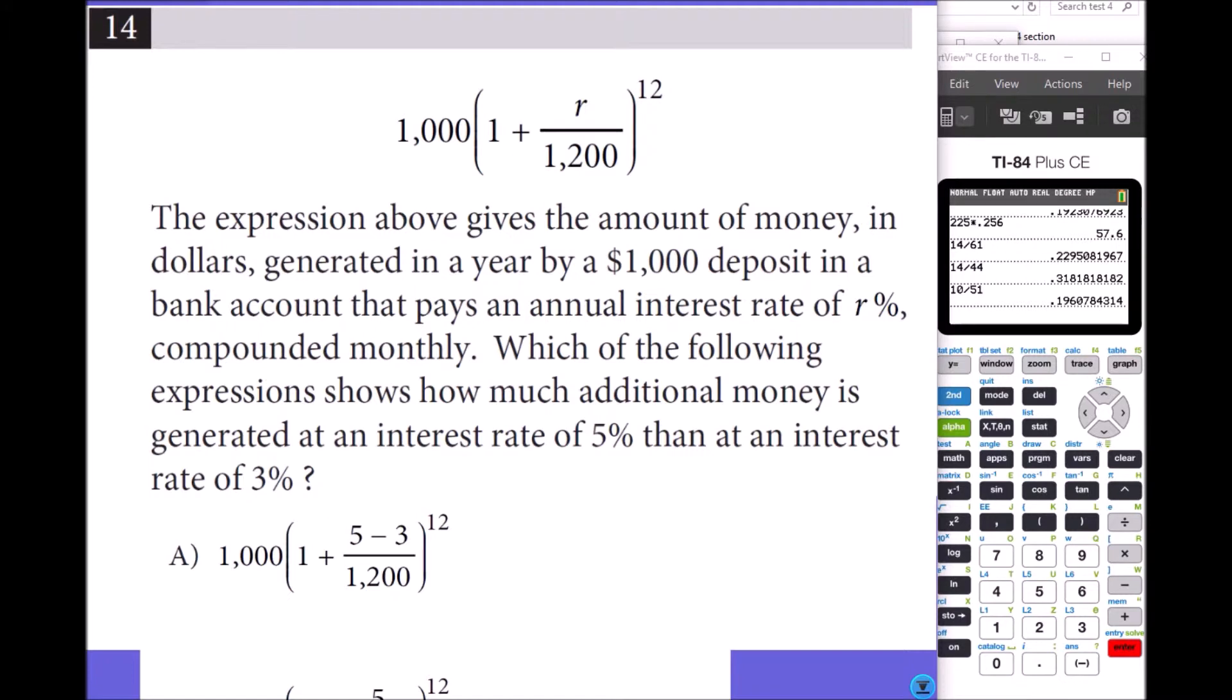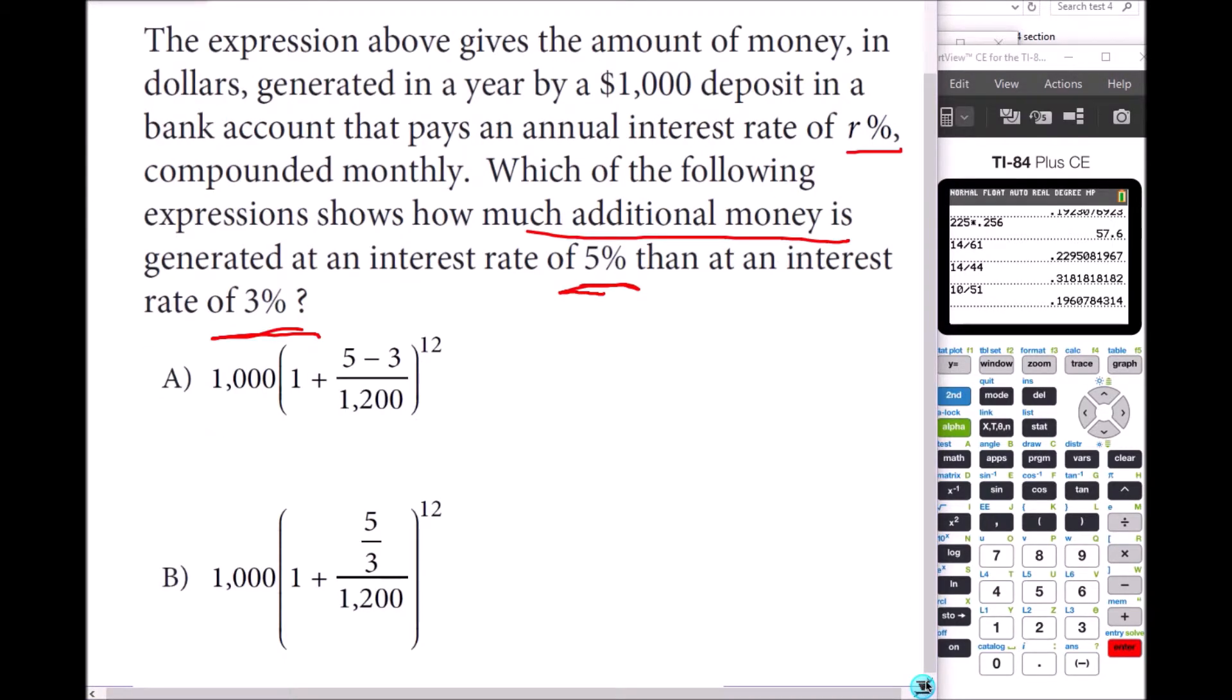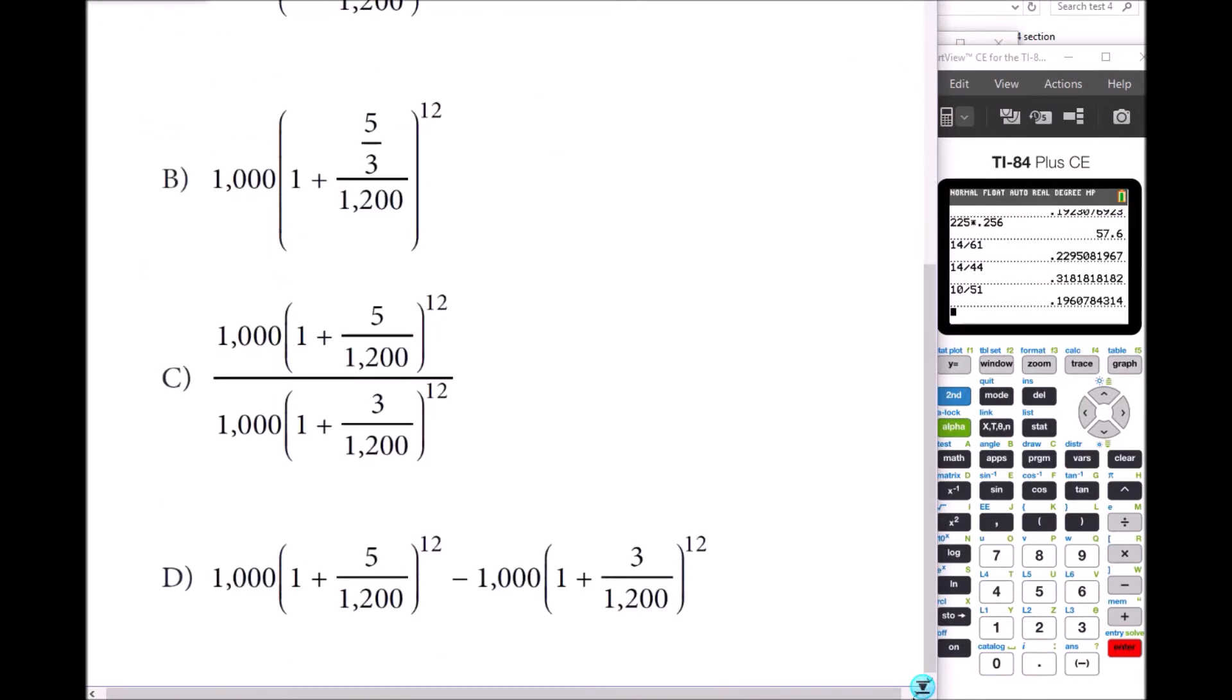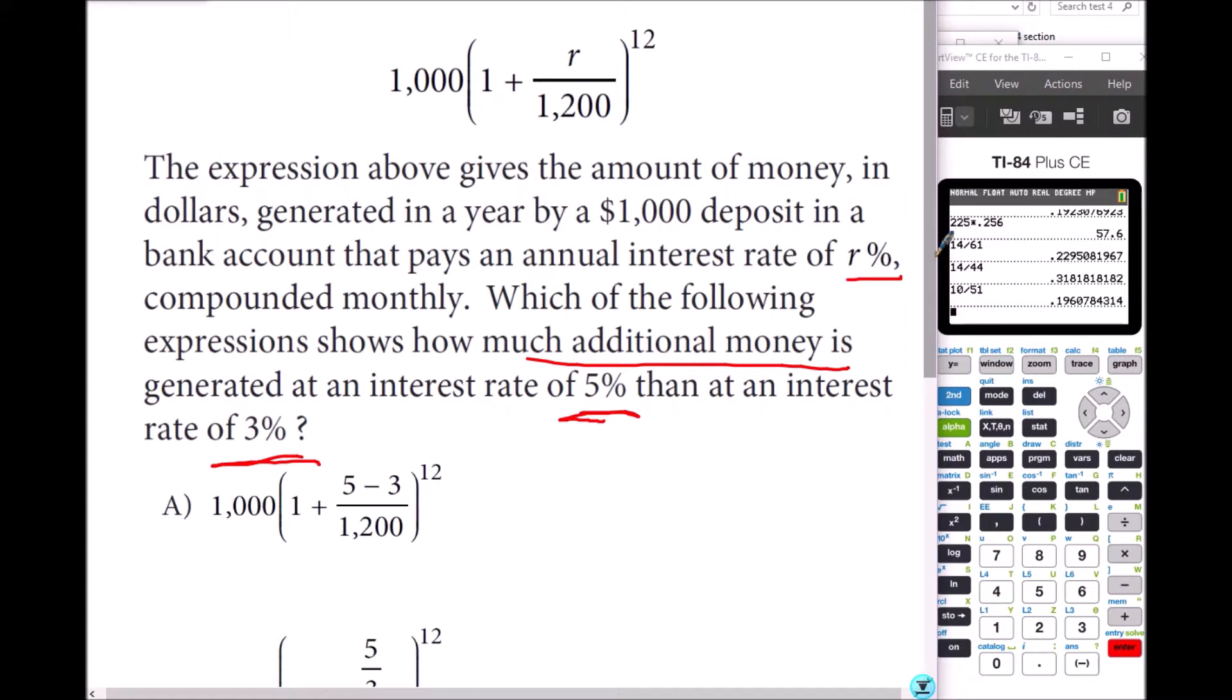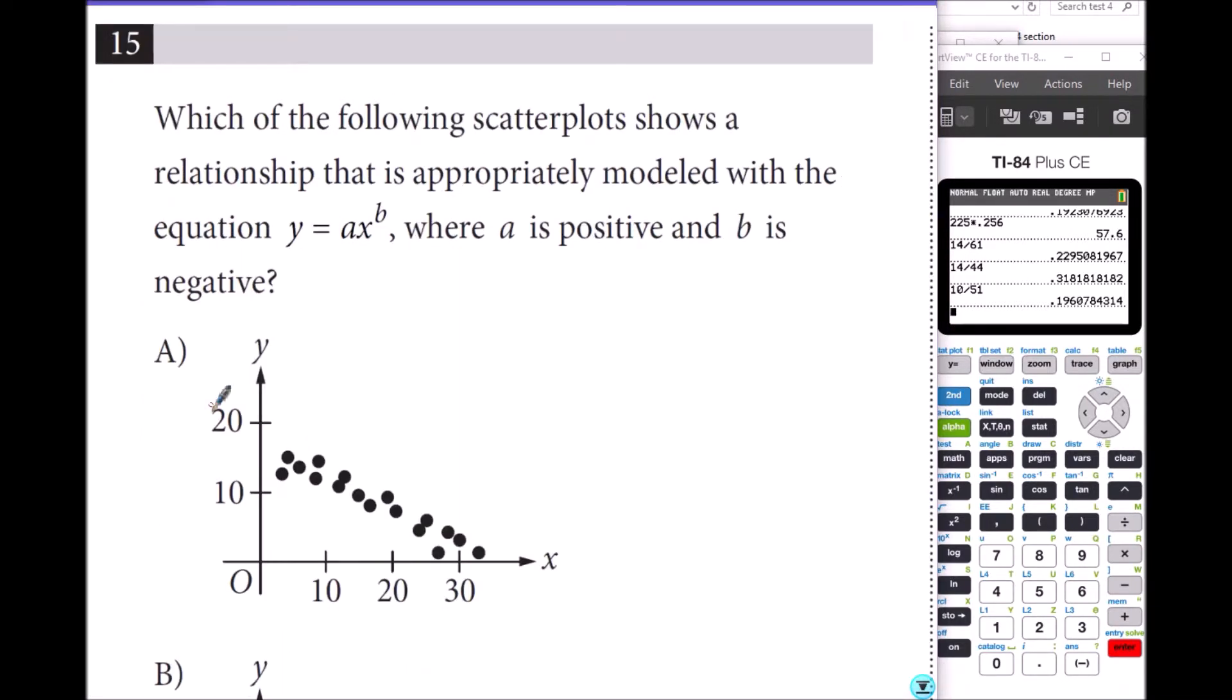Number 14: The expression gives the amount of money in dollars generated in a year by a $1,000 deposit in a bank account that pays annual interest rate R compounded monthly. Which expression shows how much additional money is generated at an interest rate of 5% than at 3%? So R becomes 3 and 5, and we want to know the additional money, so we have to get the difference. You cannot just find the difference of rates because then it just becomes 2%, which is not true in real life. You have to put 5 and get how much you will get, and put 3 and find the difference.